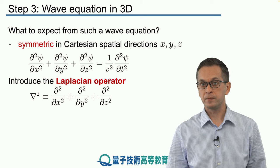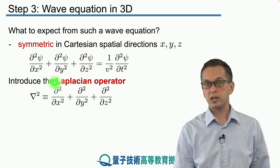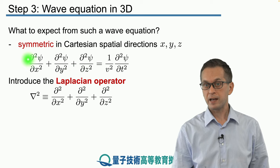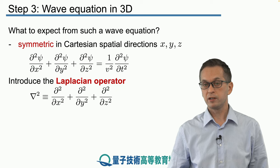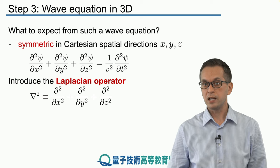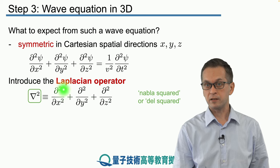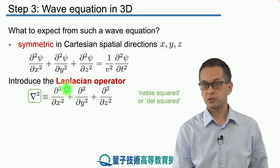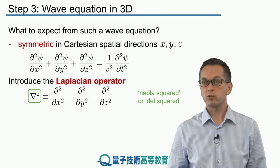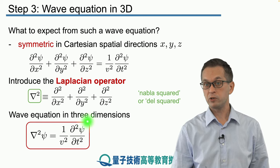This is in Cartesian form, and in particular the left-hand side is very useful — it pops up all the time in physics, engineering, and mathematics. Therefore this operator has its own name: it's called the Laplacian operator. It's denoted by an inverted delta symbol, called nabla squared or del squared, and it's defined as the sum of the second-order partial derivatives with respect to x, y, and z. More concisely, we can write the three-dimensional wave equation using the Laplacian, and that's the form we'll be using.